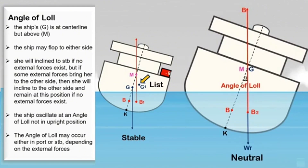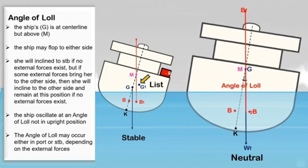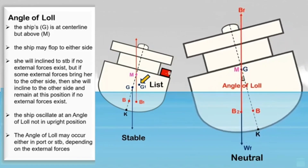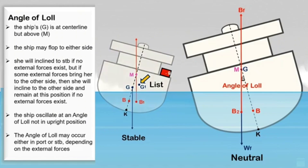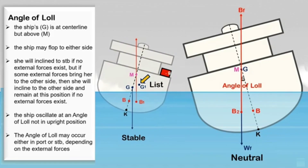At the angle of loll, the ship may flop to either side. She will heel to starboard and remain there if no external forces exist, but if external forces bring her to the other side, she will heel to port and remain there. The ship will oscillate about the angle of loll instead of her upright position. The angle of loll may occur on either port or starboard depending on the direction of external forces, whereas in listing the ship will only list to the side where the ship's center of gravity is off the centerline.